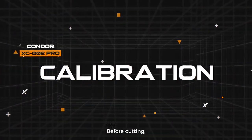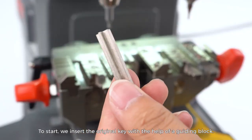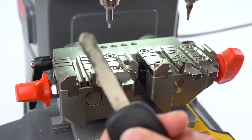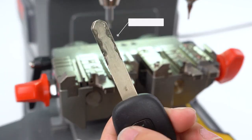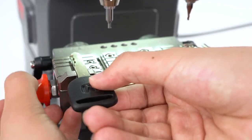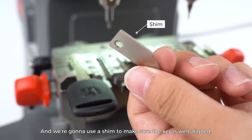Calibration. Before cutting, always make sure the machine is well calibrated. To start, we insert the original key with the help of a guiding block and we're going to use a shim to make sure the key is well aligned.